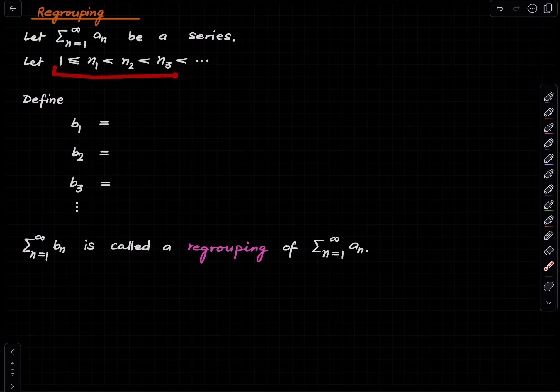We have some infinite series, and suppose we have a sequence of natural numbers increasing—n₁, n₂, n₃ in increasing order. We define a new sequence, and for b₁, you sum up the first n₁ terms of the original series.